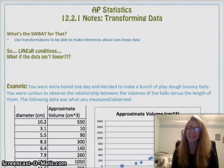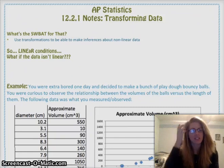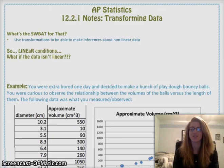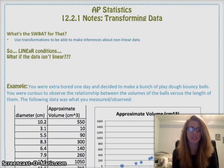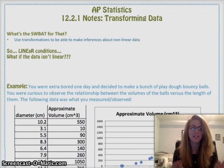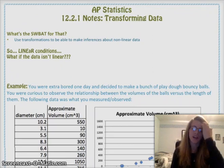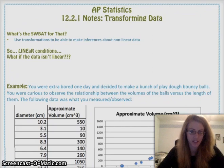Hello, AP Stats. I hope you guys are having a great day. Today we're going to be starting 12.2, which is a little different from our normal. The past three chapters have been hypothesis tests and confidence intervals. This deviates a little bit. We're still focusing on scatter plots, but we're looking at something a little different: transforming data to make inferences about nonlinear data.